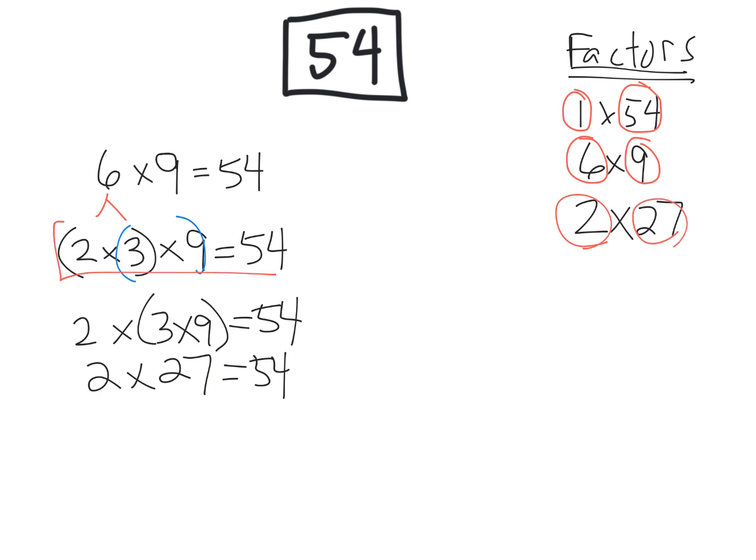And we can go back up to this thing, and we could use the commutative property. So we could go over here. So let me get caught up again. So it's 2 times 3 times 9. And that's equal to 54, right?